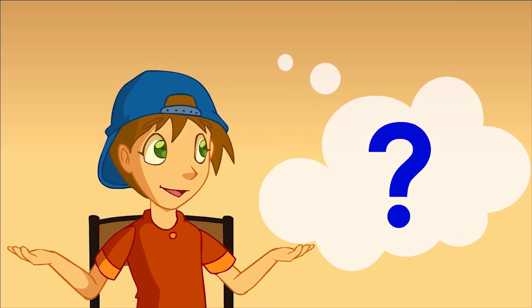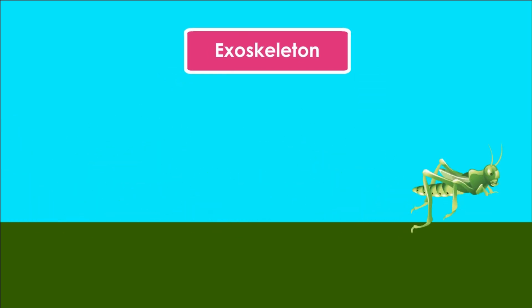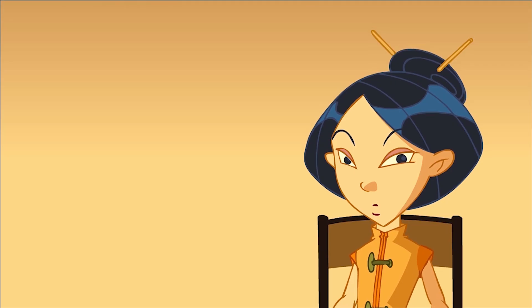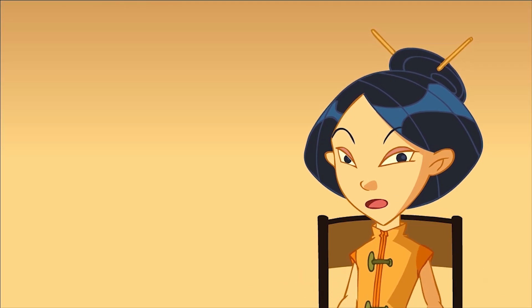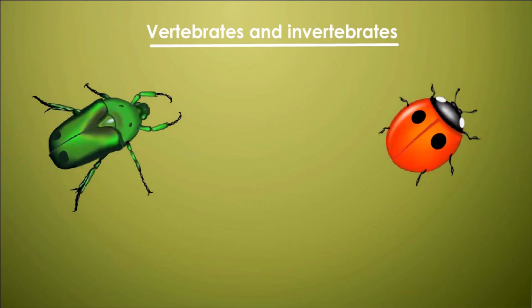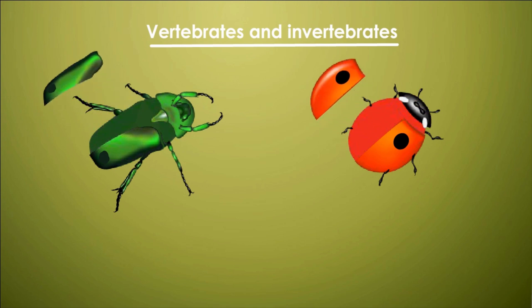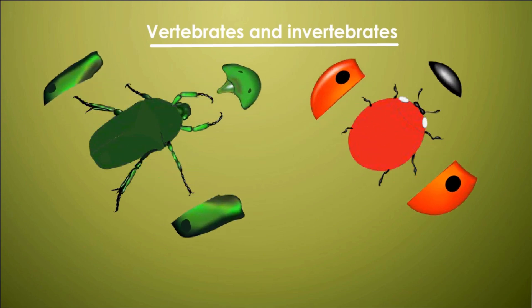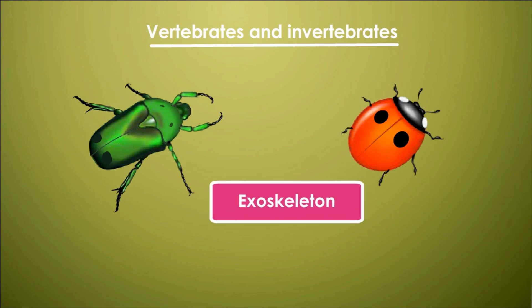What is the other type? The other type of hard skeleton is the exoskeleton. It's called this way because the hard part is located on the outside of the animal body. I can't imagine an animal like that. Insects, for example, have got a hard skeleton surrounding their body. That's an example of exoskeleton.